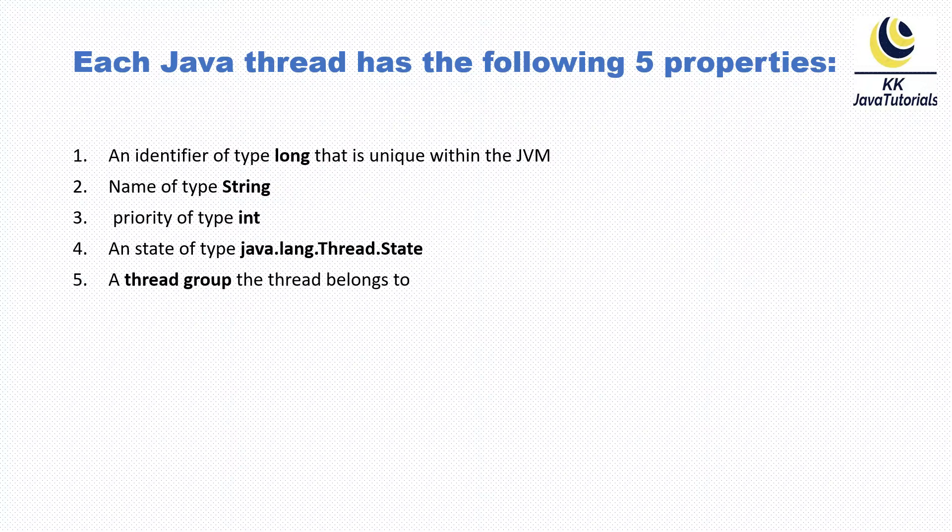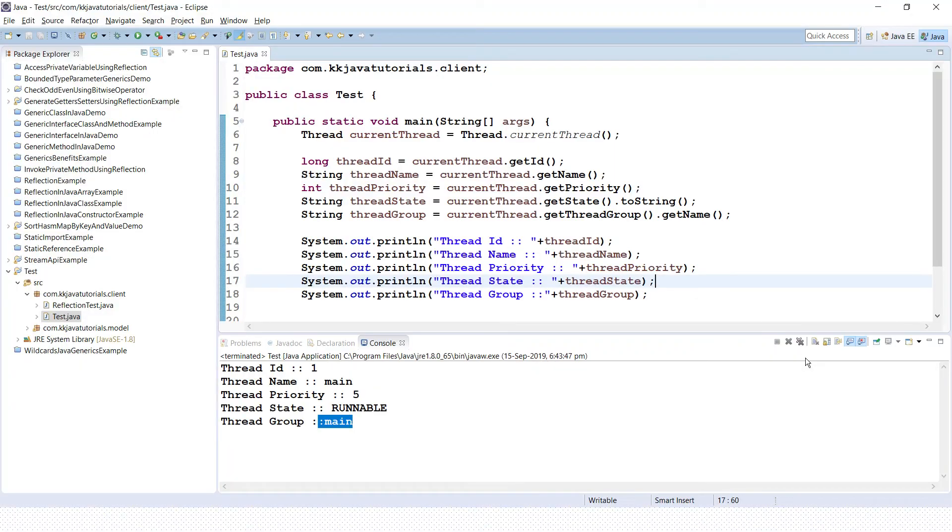Let's try to understand these things through an example. Here is the example which I have already created offline just to save some time. You can see I haven't created explicitly any Java thread, but in your application at least you have one thread and that is called the main thread from where your program execution starts.